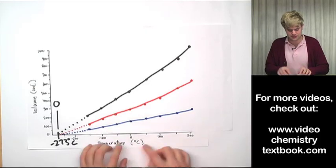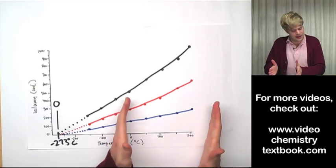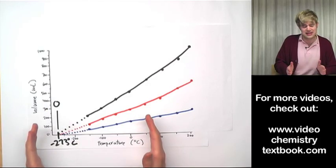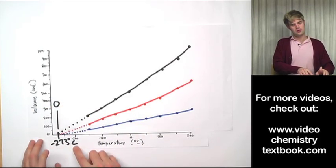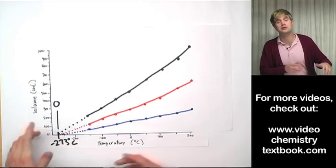The Kelvin scale is just like the Celsius or centigrade scale except it's just shifted down so that zero Kelvin is the coldest possible temperature which is at negative 273 degrees Celsius.